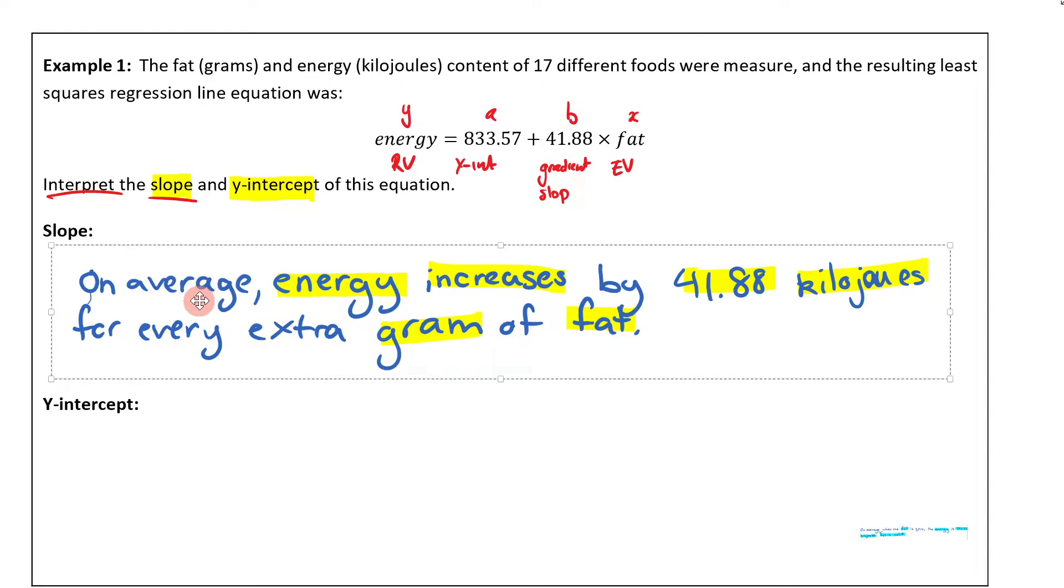You can see here, on average, the response variable—energy—increases. How do I know it's increasing? I know it's increasing because I have a positive value in front of the gradient. That's telling me this thing is increasing because I've got a positive gradient.